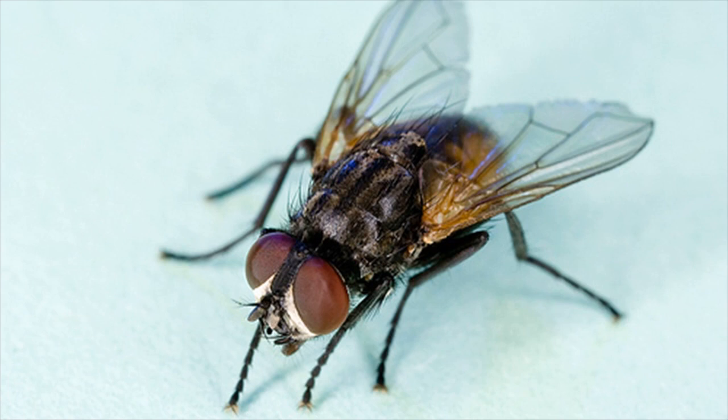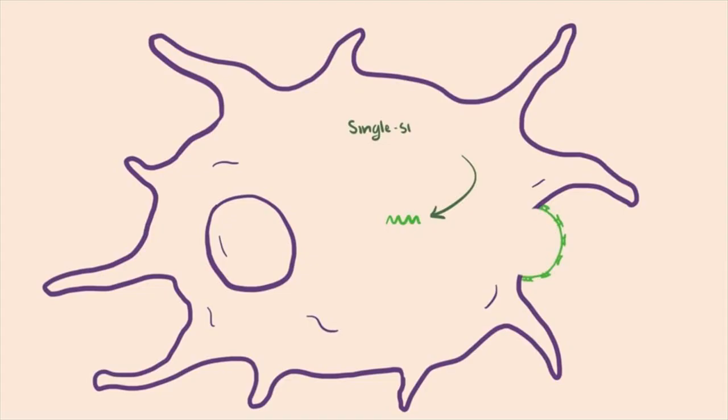Salmonella: this disease happens more in children than adults. The symptoms of this disease appear later after getting infected. The common symptoms are fever and stomach pain. It is considered a kind of food poisoning.